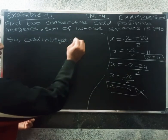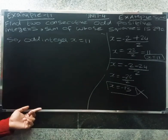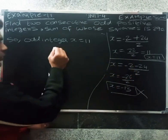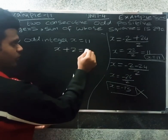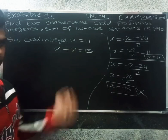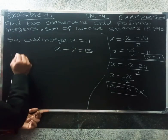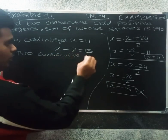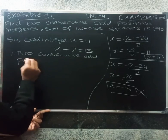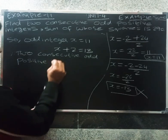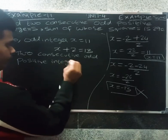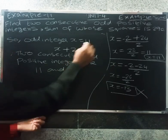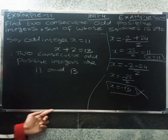So x equals 11. The second integer, consecutive positive integer, is x plus 2 equals 13. Therefore, the two consecutive odd positive integers are 11 and 13.